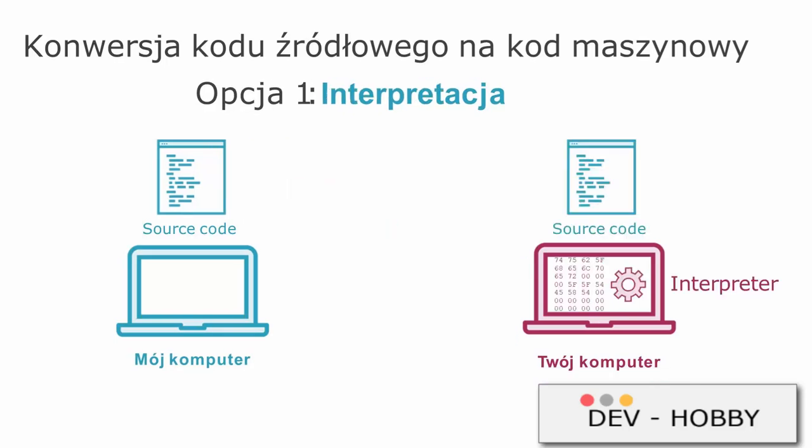Option two is to use an interpreter. In this approach, I give you a copy of my source code instead of compiling it. Your computer must translate this code into machine code using an interpreter. However, you do not need to install translation software specifically — interpreters are often already included in web browsers or operating systems. An example is a JavaScript interpreter built into a web browser. With an interpreter, the conversion of code to machine code does not occur in advance; it happens only when the program is launched. The interpreter analyzes subsequent instructions, transforming them into machine code and immediately running it, without saving it as a separate file.